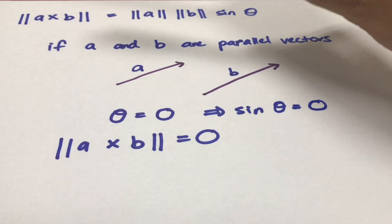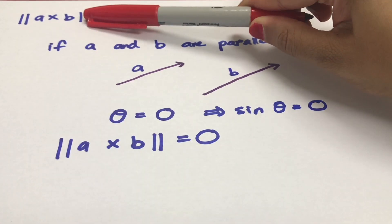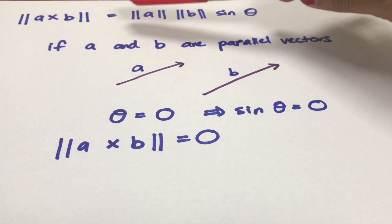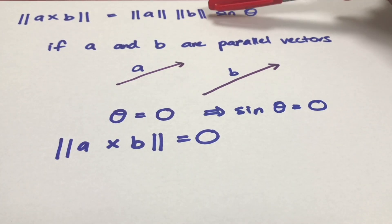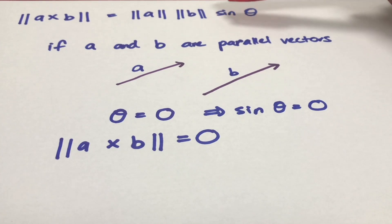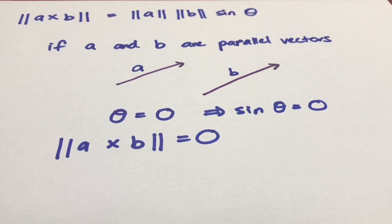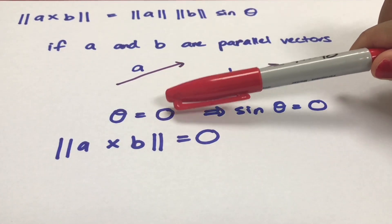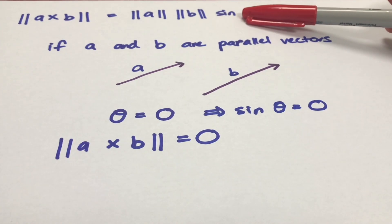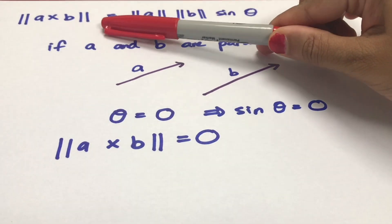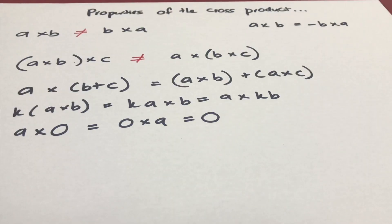The magnitude of a cross b equals the multiplication of the magnitudes of a and b and the sine of the angle between the vectors. If a and b are parallel vectors, the angle between them is 0, so sin θ equals 0, and the magnitude of a cross b is 0. Let's learn about some properties of the cross product.